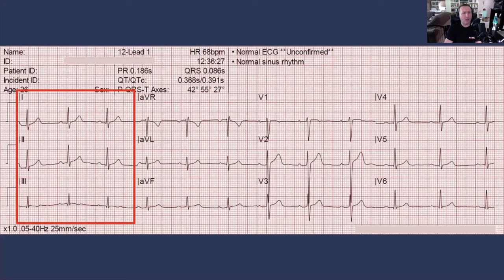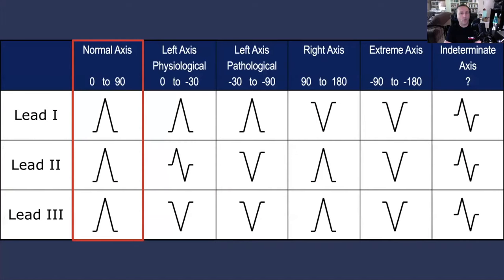Another thing we can do is a speed method using leads 1, 2, and 3. You'll notice the QRS complex is upright in lead 1, upright in lead 2, and upright in lead 3. Using a cheat sheet, you can say the QRS axis on this ECG is somewhere between 0 and 90 degrees. So that is the second speed method.